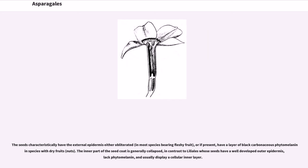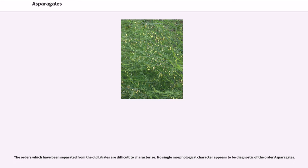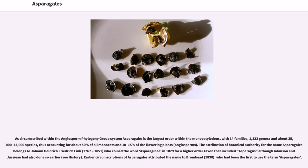The seeds characteristically have the external epidermis either obliterated in most species bearing fleshy fruit, or, if present, have a layer of black carbonaceous phytomelanin in species with dry fruits or nuts. The inner part of the seed coat is generally collapsed, in contrast to Liliales, whose seeds have a well-developed outer epidermis, black phytomelanin, and usually display a cellular inner layer. No single morphological character appears to be diagnostic of the order Asparagales.